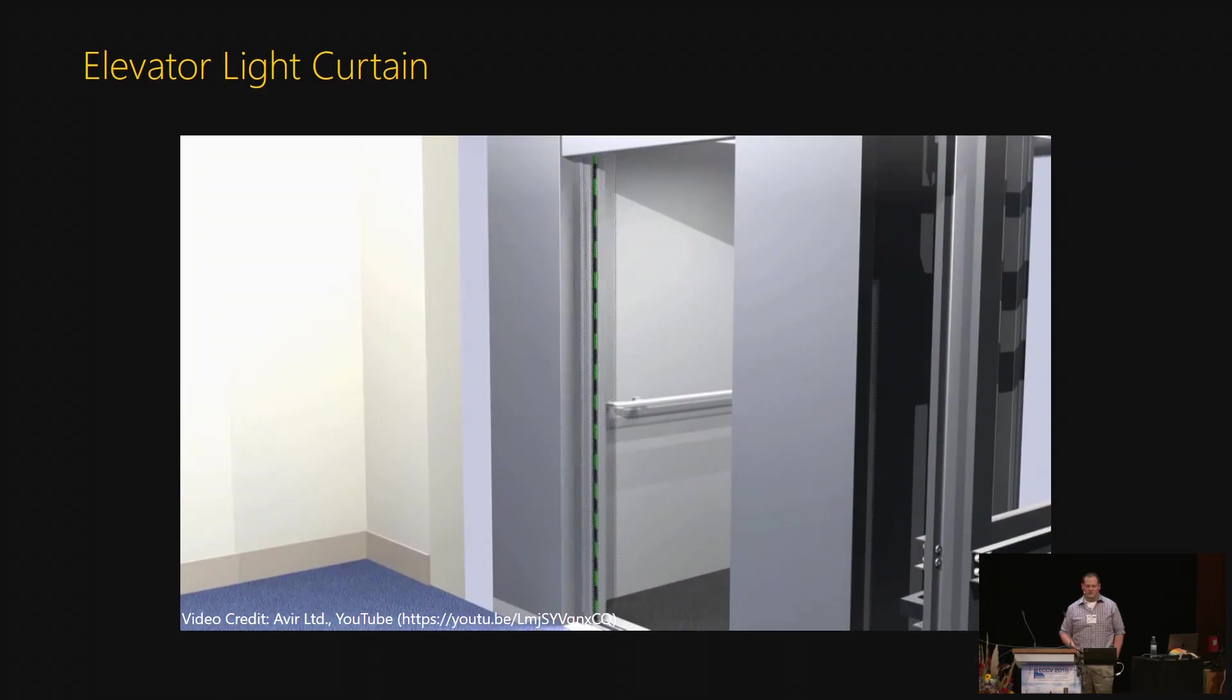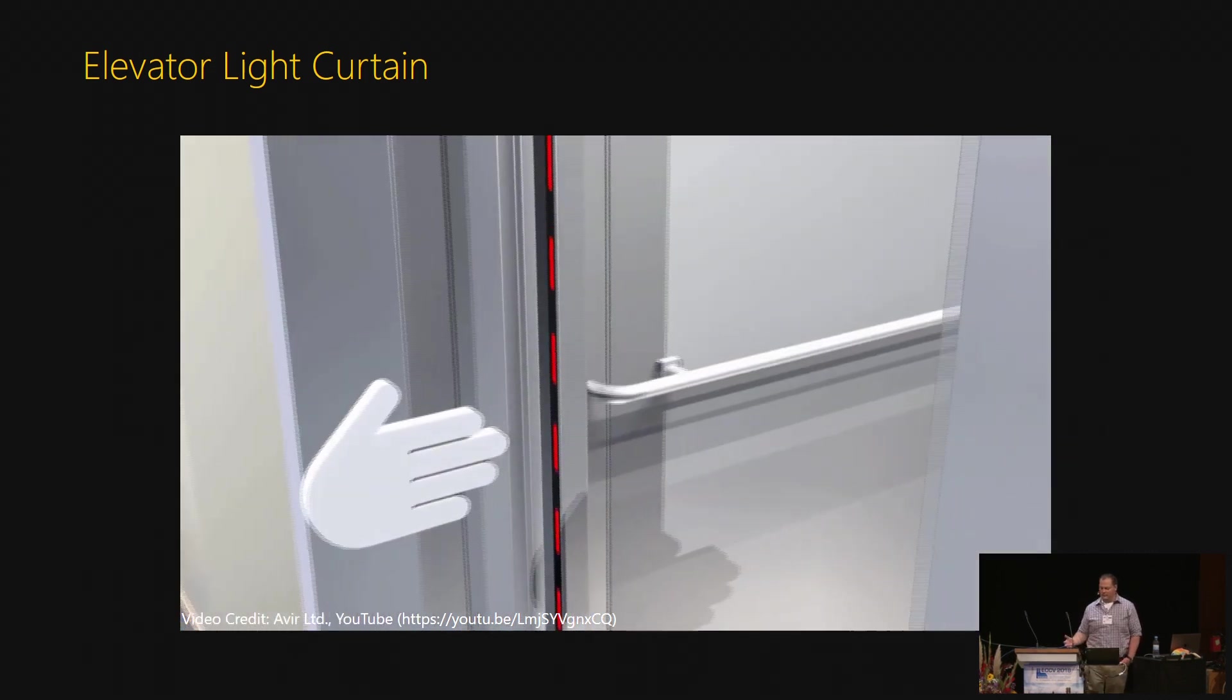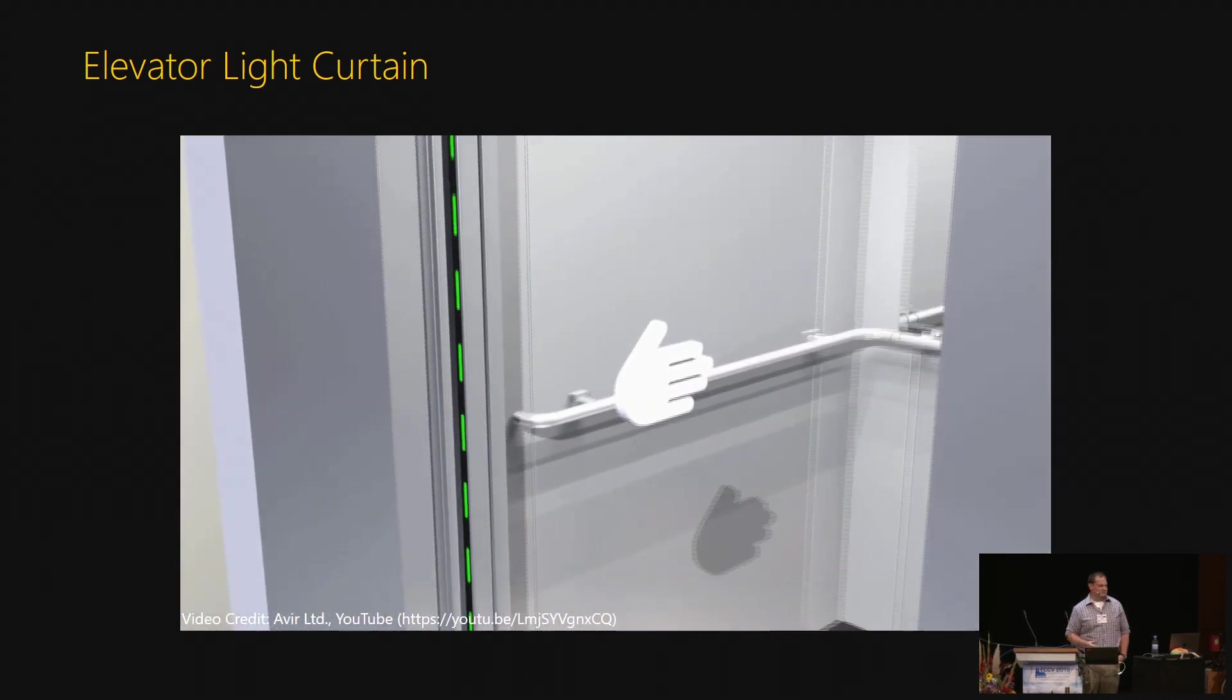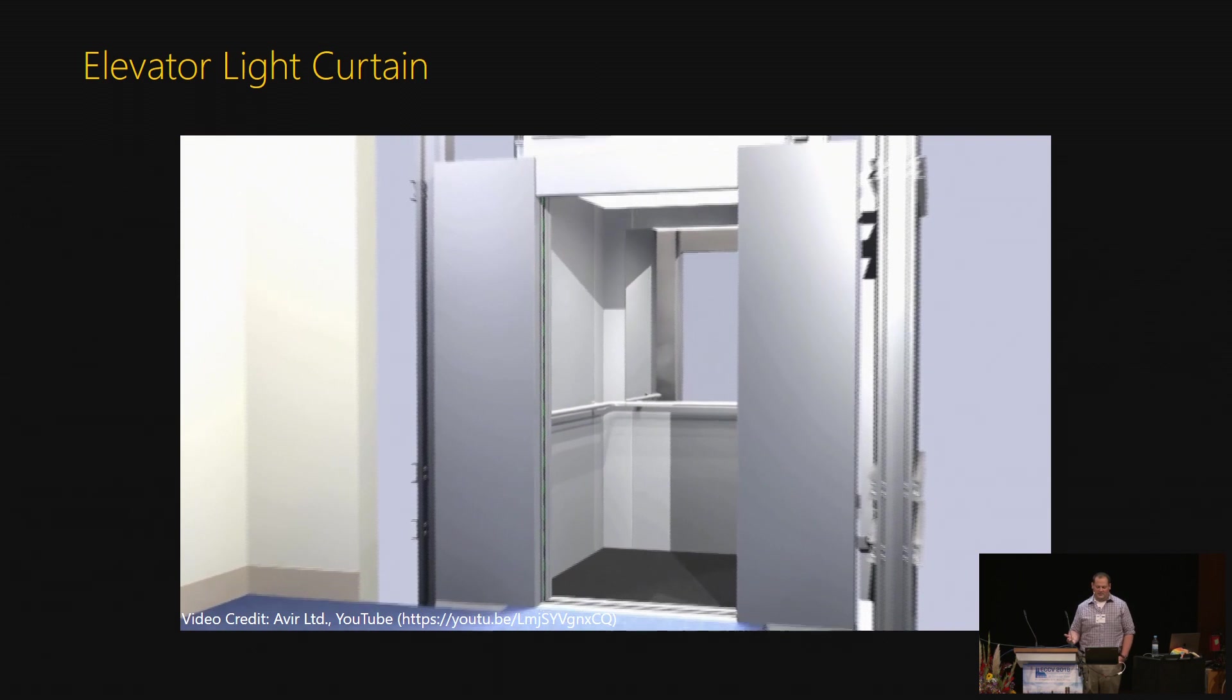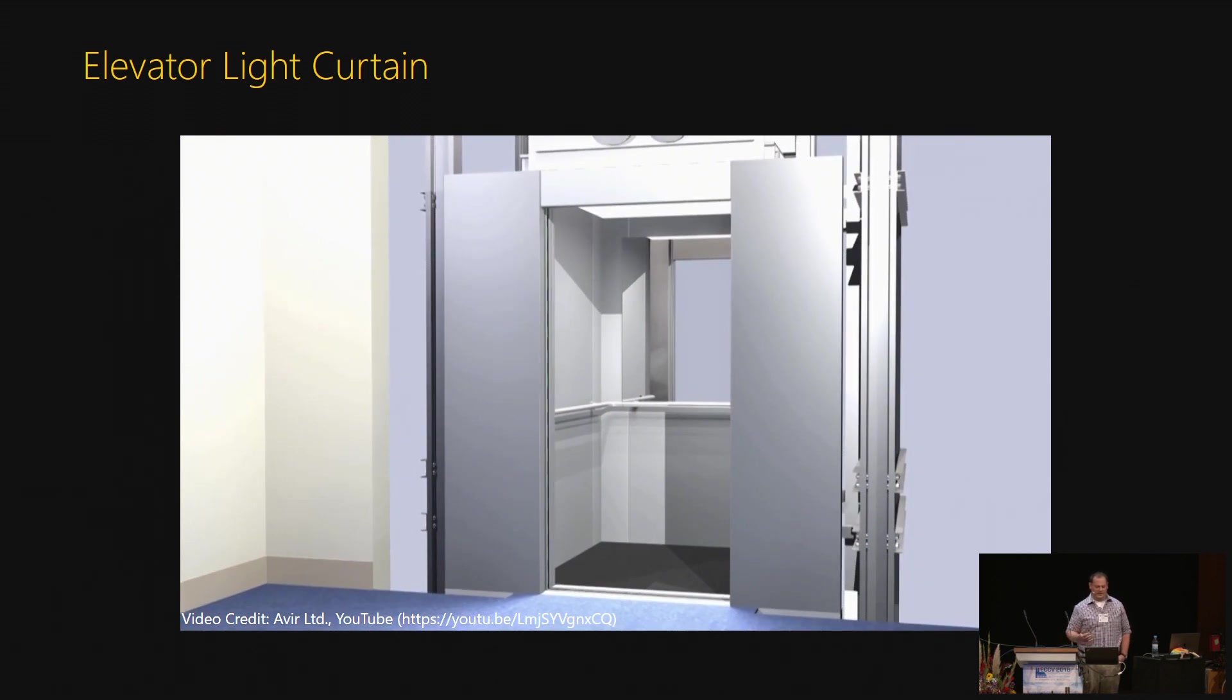For example, you go into an elevator and you put your hand in the way of the door while it's closing and it stops. This is a light curtain. You have a light source on one side and a light sensor on the other, and when the light path gets blocked, it tells the elevator there is something in the way and the elevator opens again.